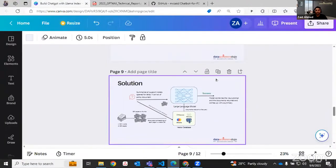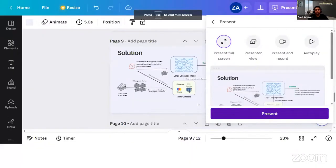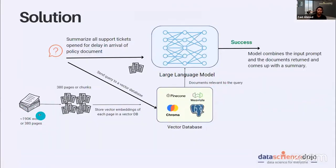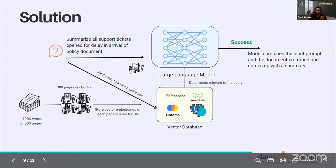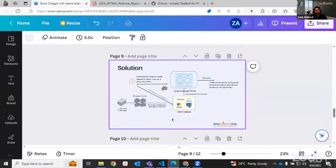To recap the full architecture: we chunk data into bits and pieces, store them in a vector database, the user asks a question, the question goes to the vector database where vector similarity search retrieves relevant documents, those documents plus the query are fed to the language model, and the model combines the input prompt with the documents and returns a summary. That was the theory of how orchestration frameworks work.